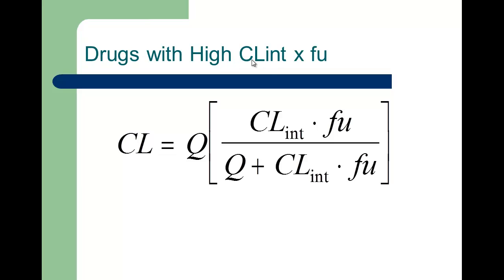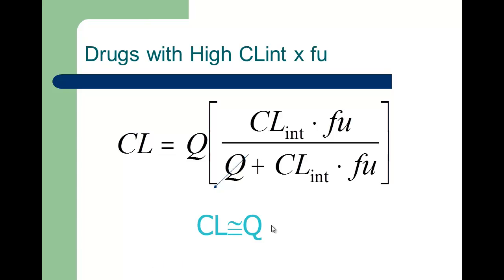Now if we have the other extreme, high extraction drugs — this is our shiny dairy where the equipment is new and the workers are happy and working really hard. The rate limiting step here is Q. Q is less than the intrinsic clearance times fraction unbound, so Q falls out of the denominator, leaving Q times intrinsic clearance times fraction unbound over intrinsic clearance times fraction unbound. So our clearance will be approximated by liver blood flow.